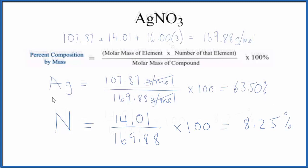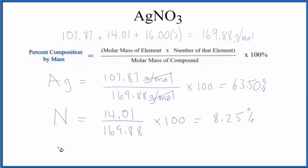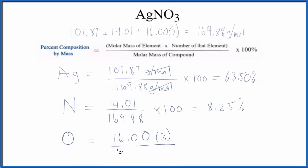Let's do the oxygen. So for the oxygen, we have 16.00. That's the molar mass of oxygen. We have three oxygen atoms, so the number of that element, the number of the oxygen, that's three. Divide again by the molar mass of the compound. Multiply by 100. And we get 28.26%.